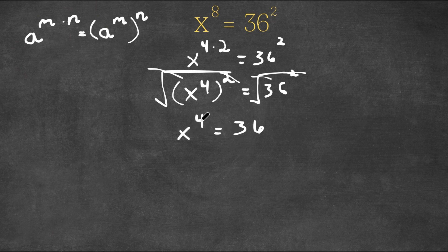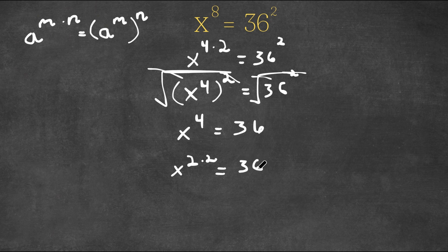And now 4 is equal to 2 times 2. So now we have x to the power of 2 times 2 is equal to 36. Again, if we have something in the form a to the power of m times n, this is equal to a to the power of m to the power of n. So I'm going to rewrite this as x to the power of 2 to the power of 2.